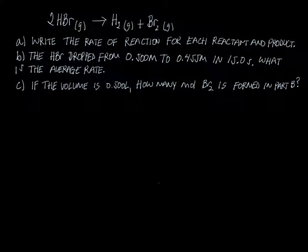Let's look at this kinetic problem here. We have two equivalents of HBr reacting to form one equivalent of hydrogen and one equivalent of bromine, and they are all gases. The problem asks us to write the rate of reaction for each reactant and product.